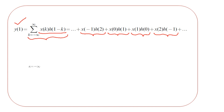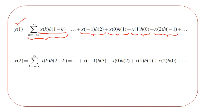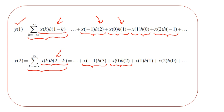Next, we obtain Y of 2. Here the summation is for the product of X of K with H of 2 minus K. Compared to Y of 1 where it was H of 1 minus K, this time we have H of 2 minus K. The products are: X of minus 1 with H of 3, X of 0 with H of 2, X of 1 with H of 1, and X of 2 with H of 0. These products are summed together to obtain Y of 2.